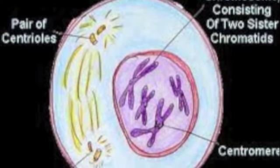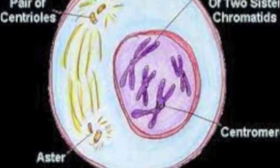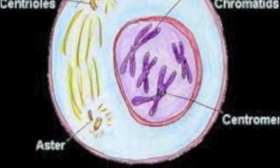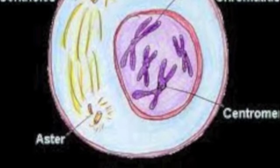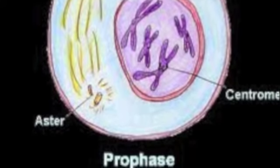Within prophase, the nucleolus disappears within the cell, the nuclear envelope breaks down, and the chromatin condenses into chromosomes, which are thread-like structures of nucleic acids and proteins that contain the actual genes. Then comes the separation of chromosomes due to the mitotic spindle. The spindle is a tube-like structure that organizes and separates the chromosomes. This is also the step in which the chromosomes become visible under a microscope.